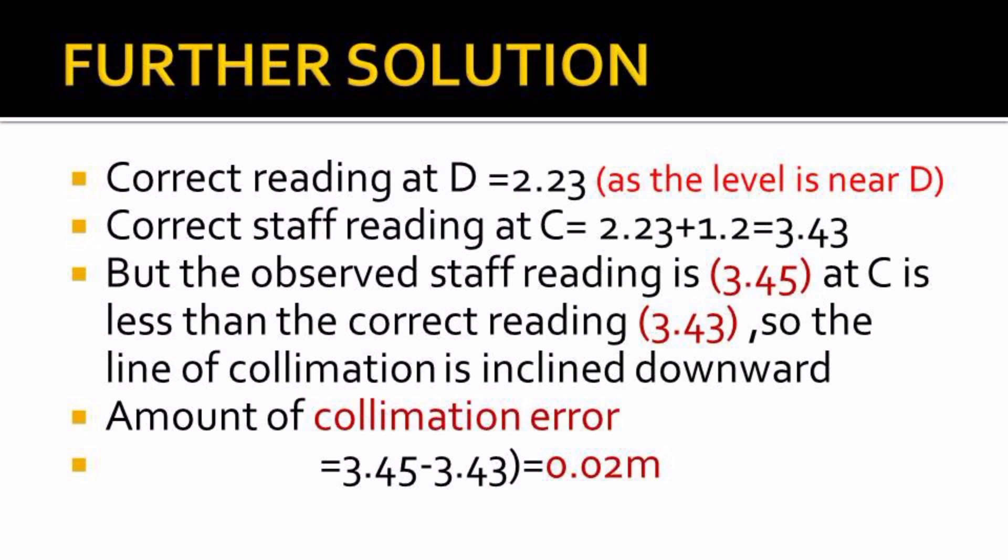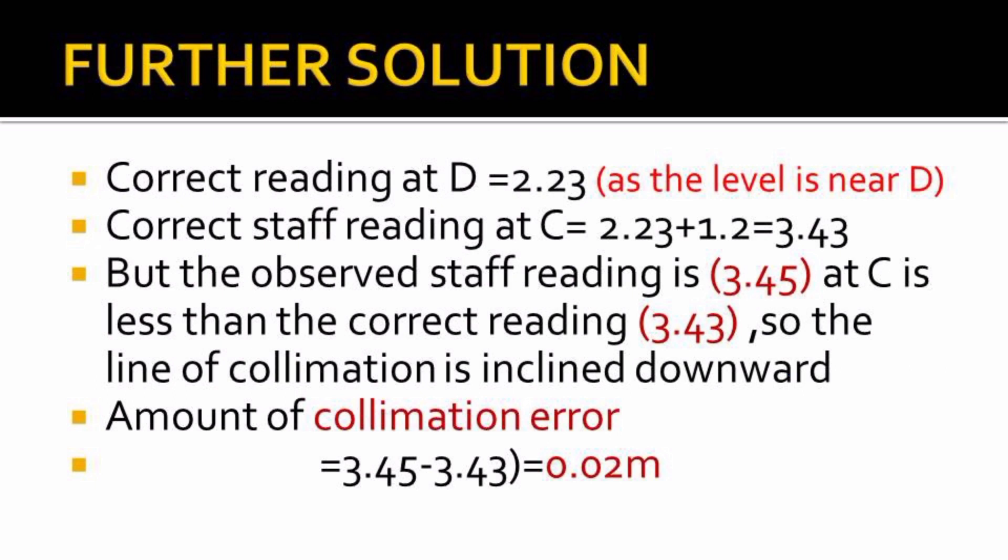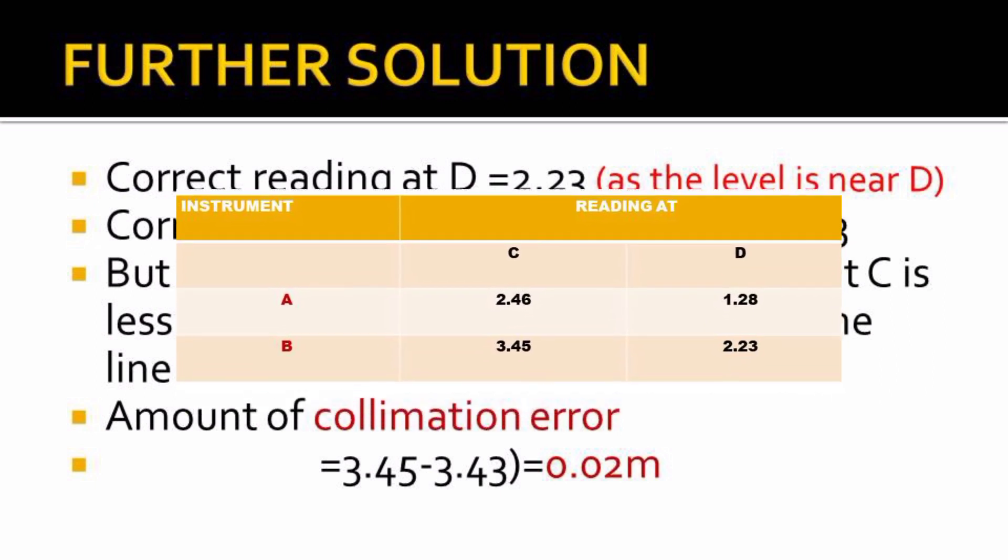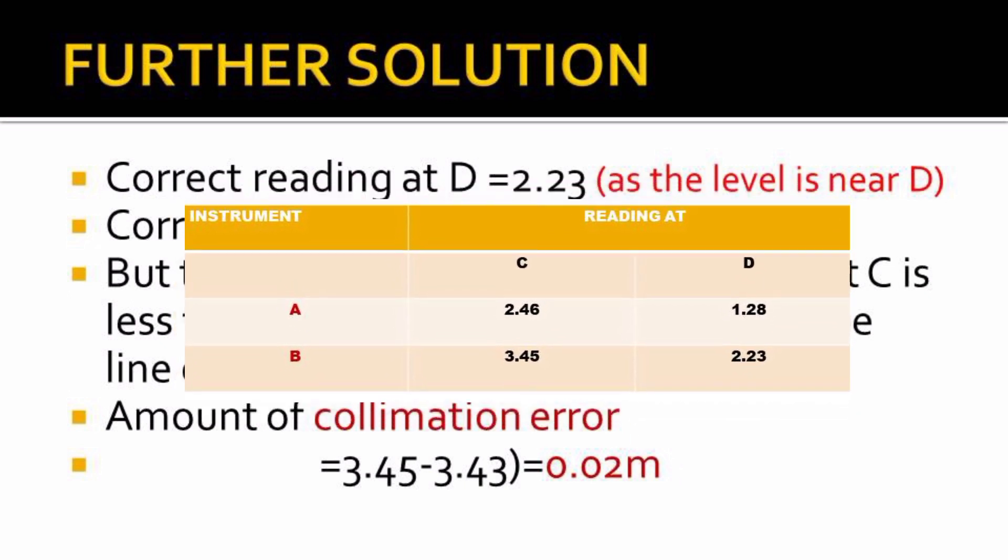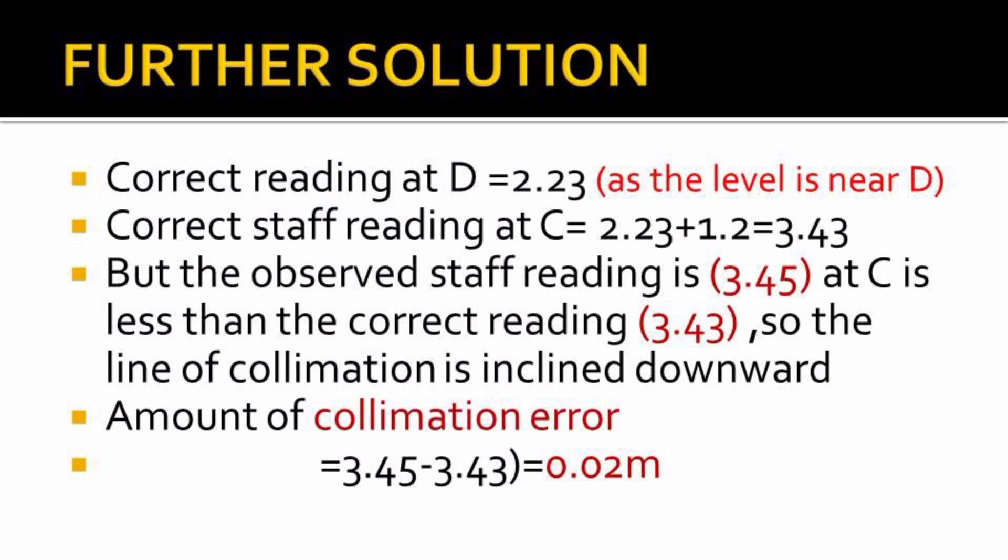The line of collimation is inclined downwards, as we have gotten from our observations. The amount of collimation error will be the observed staff reading of 3.45 minus the correct staff reading of C, which is 3.43, getting our collimation error as 0.02 meters. When the instrument was at A observing D and C, the collimation error will remain the same, 0.02 meter. Either way, both observations give us the same collimation error. Thank you for watching, that will be all, and hope to see you again.